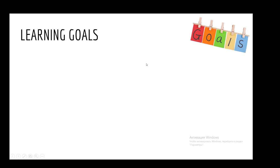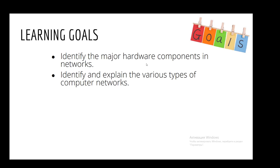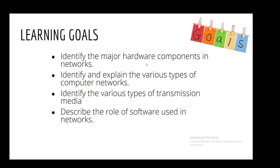Before starting our lecture, let's consider the learning goals of our course. Our course first tries to identify the major hardware components in networks. Secondly, identify and explain the various types of computer networks. As a third goal, at the end of this course we can identify the various types of transmission media and finally describe the role of software used in networks.